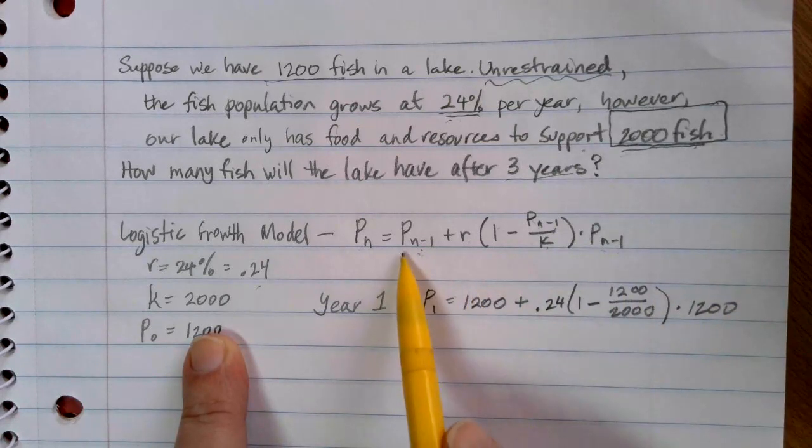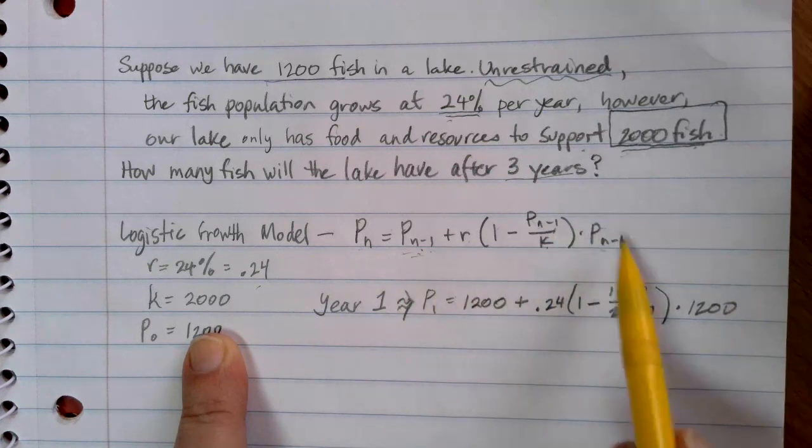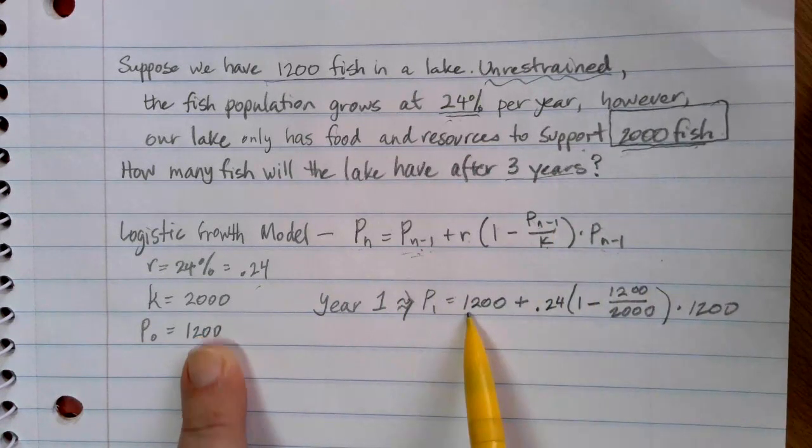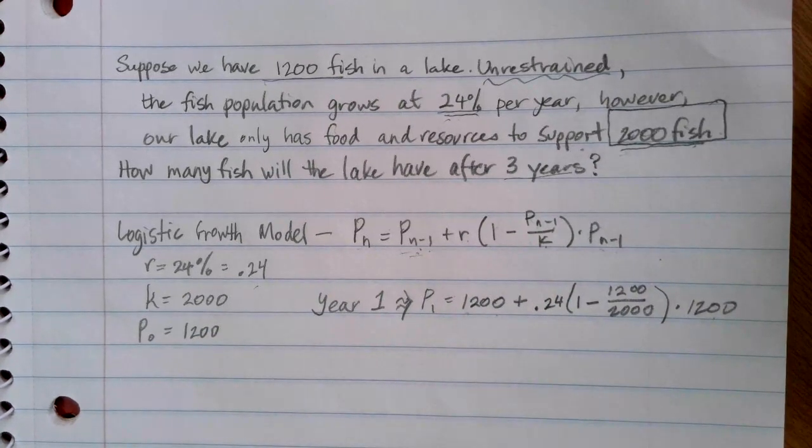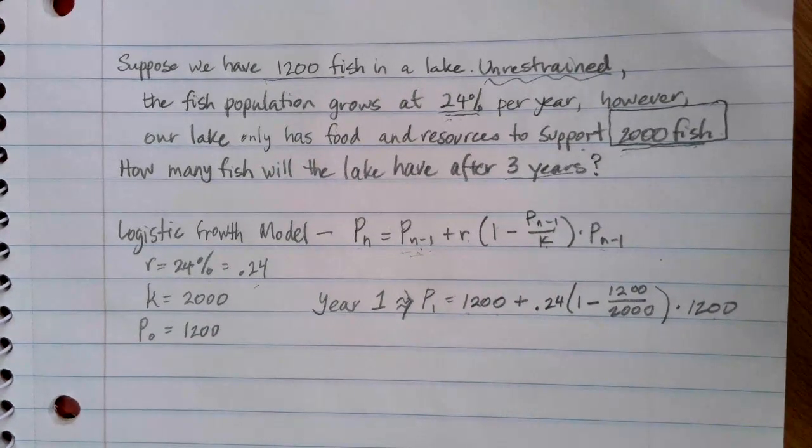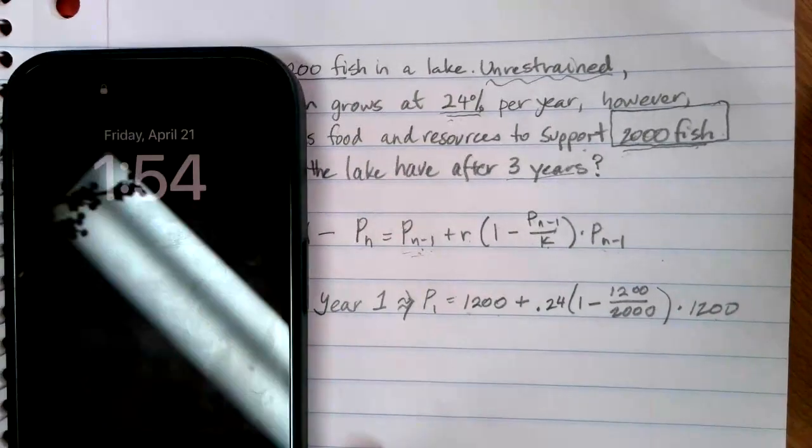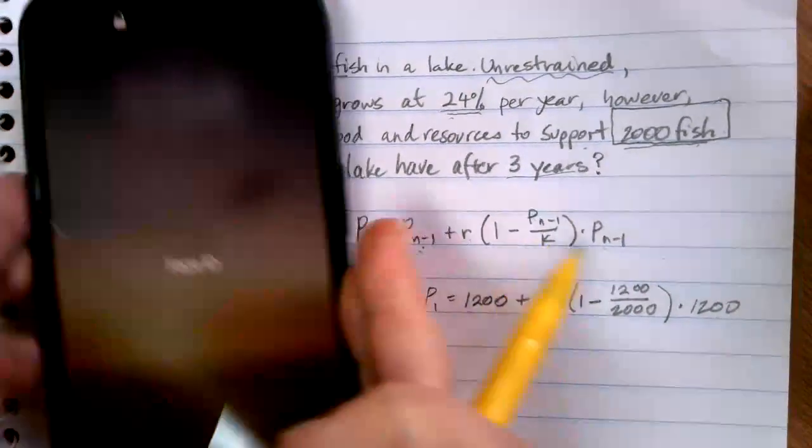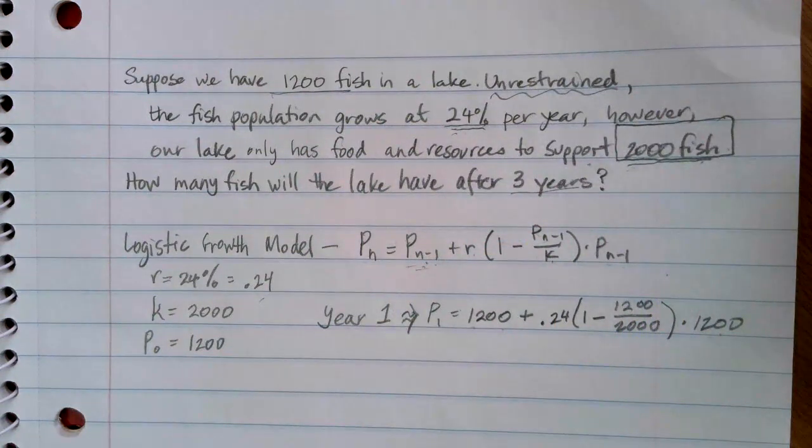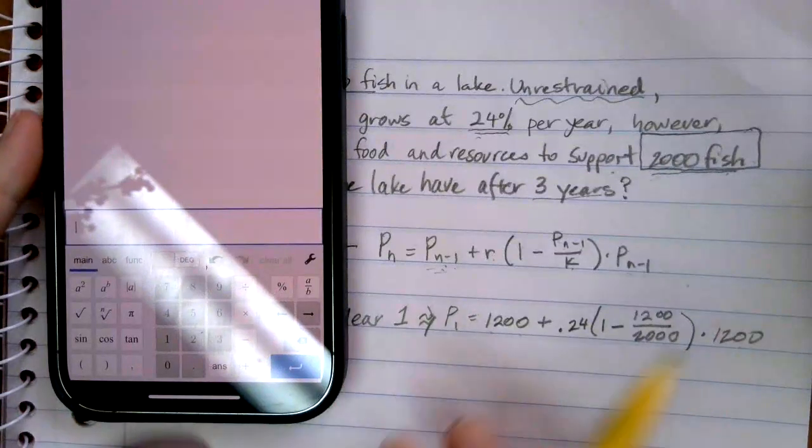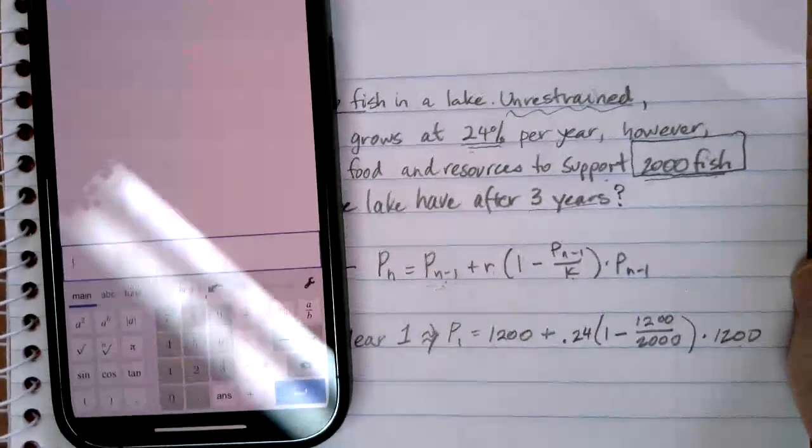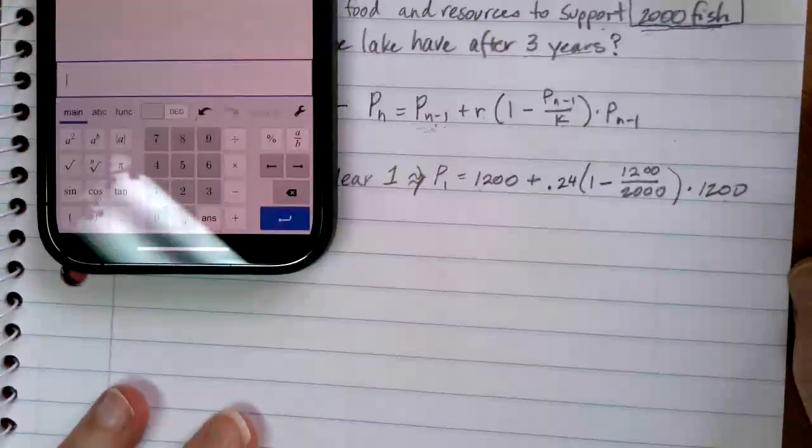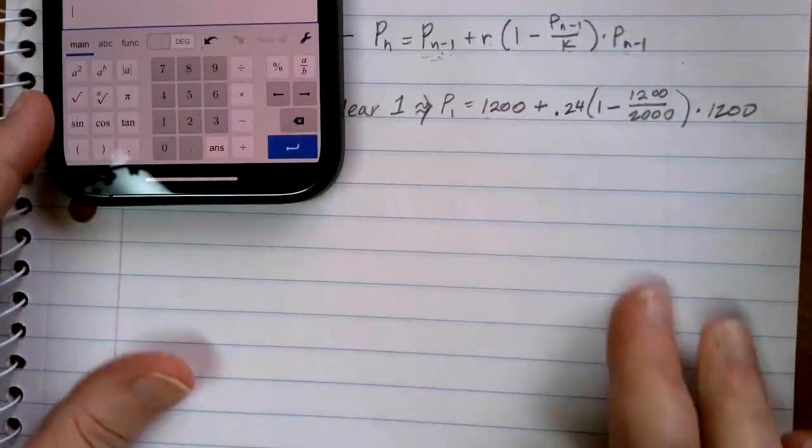Notice again, from our formula, P_(n-1) shows up one, two, three times. So our 1,200 here is showing up one, two, three times. At this point, then, what we need to do is we need to plug this into our calculator. I'm going to be using Desmos here again. Here we go. I'm going to be using Desmos here again. Let's see if we can get that glare out a little bit. There we go. Maybe.